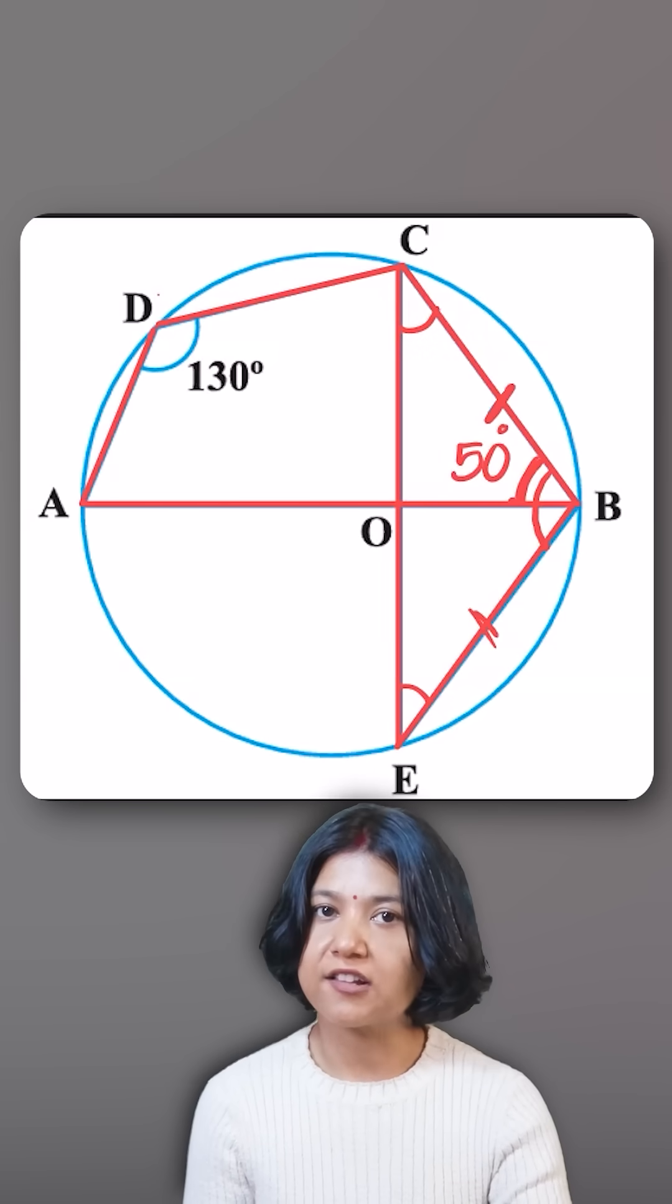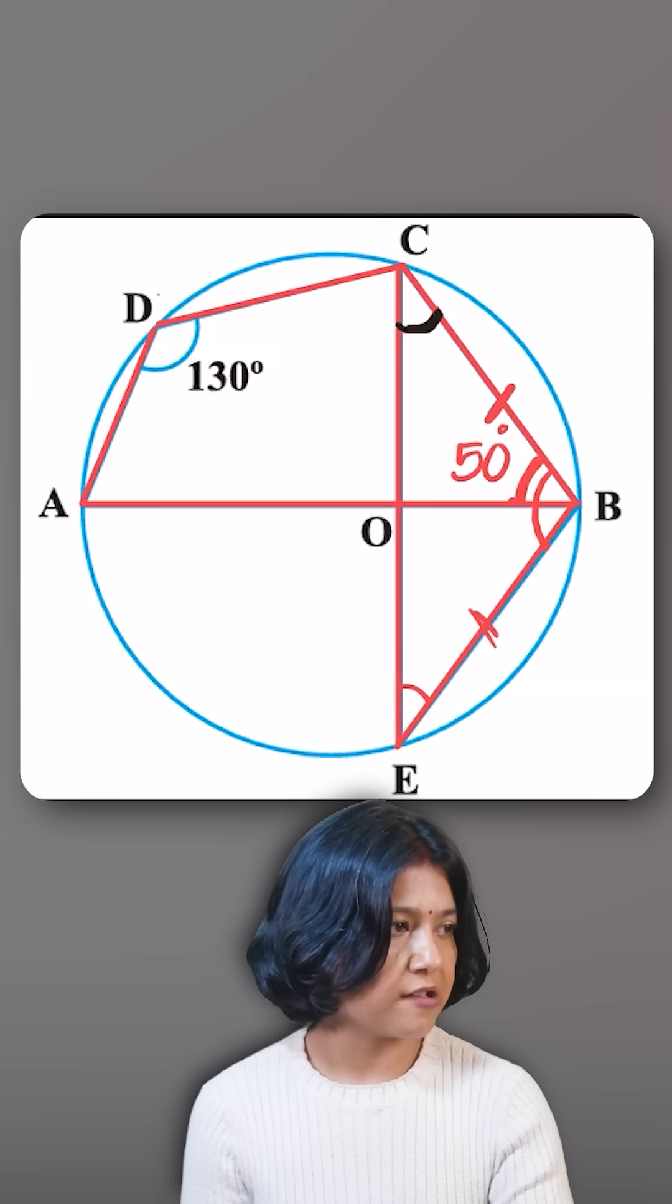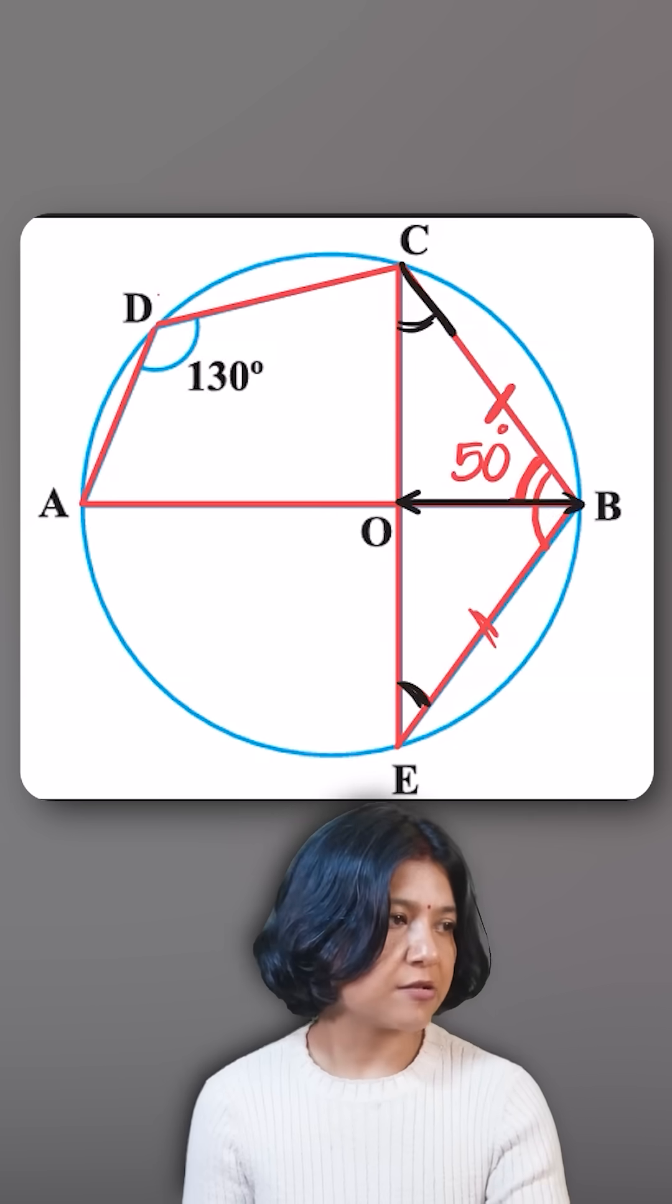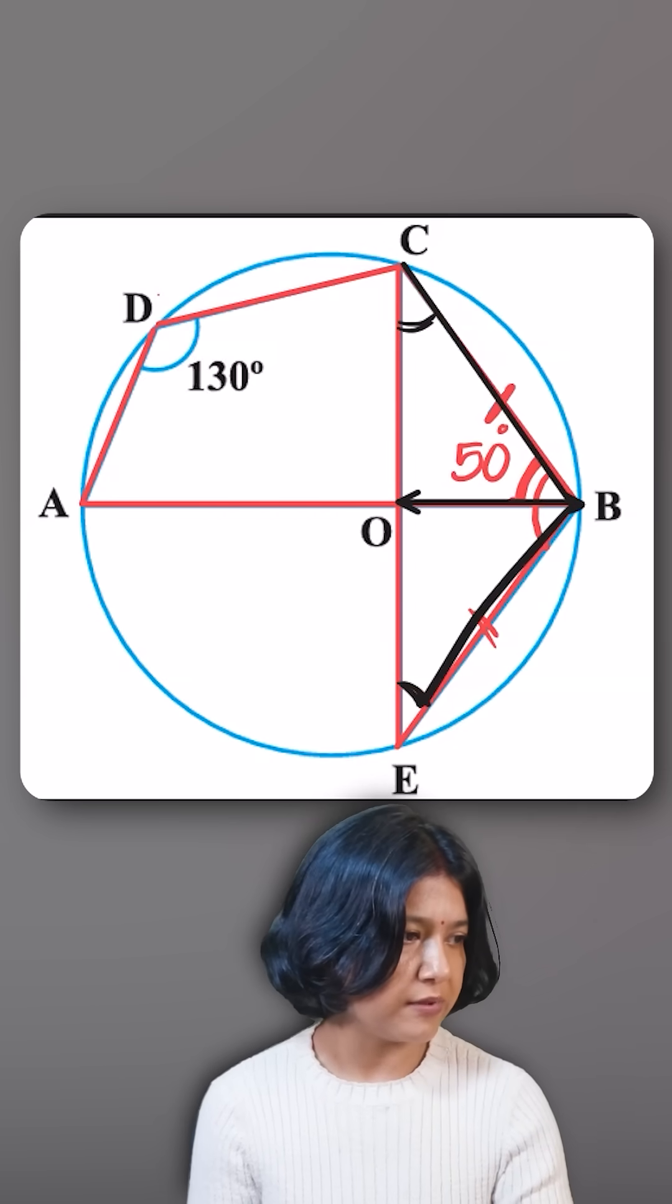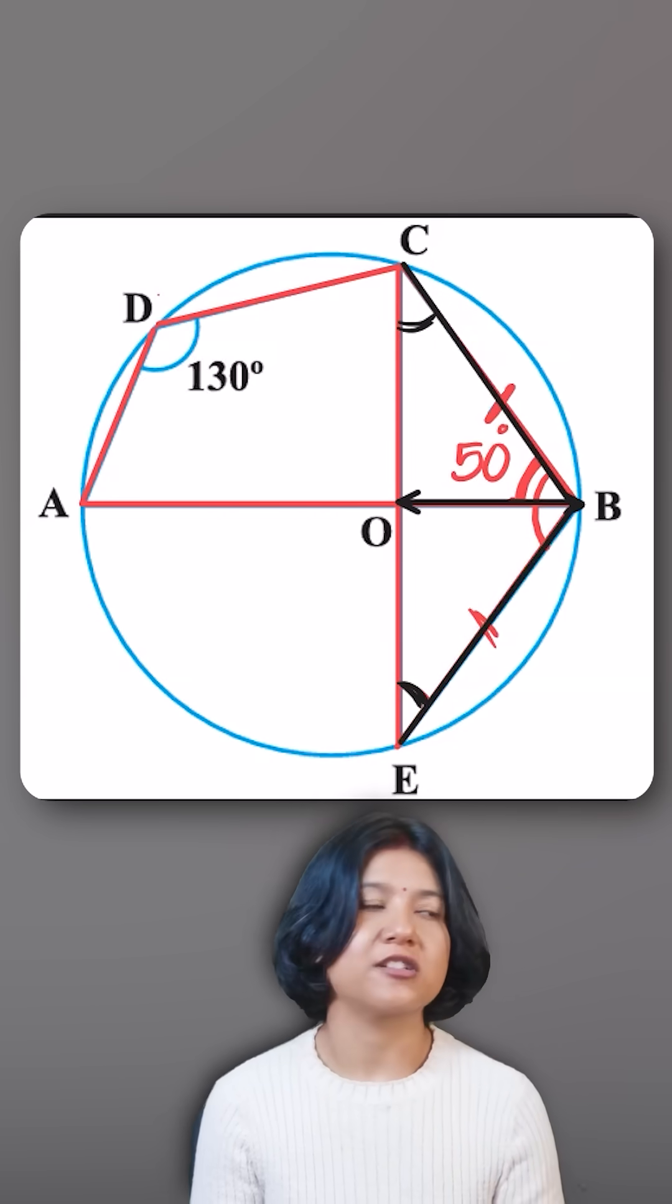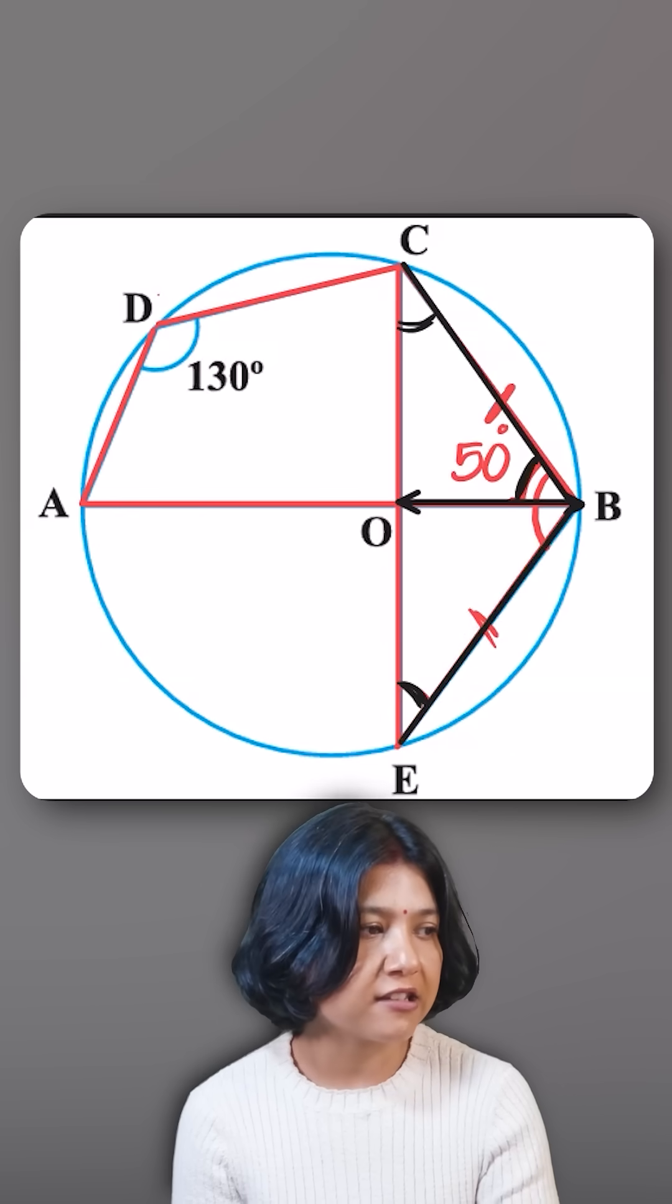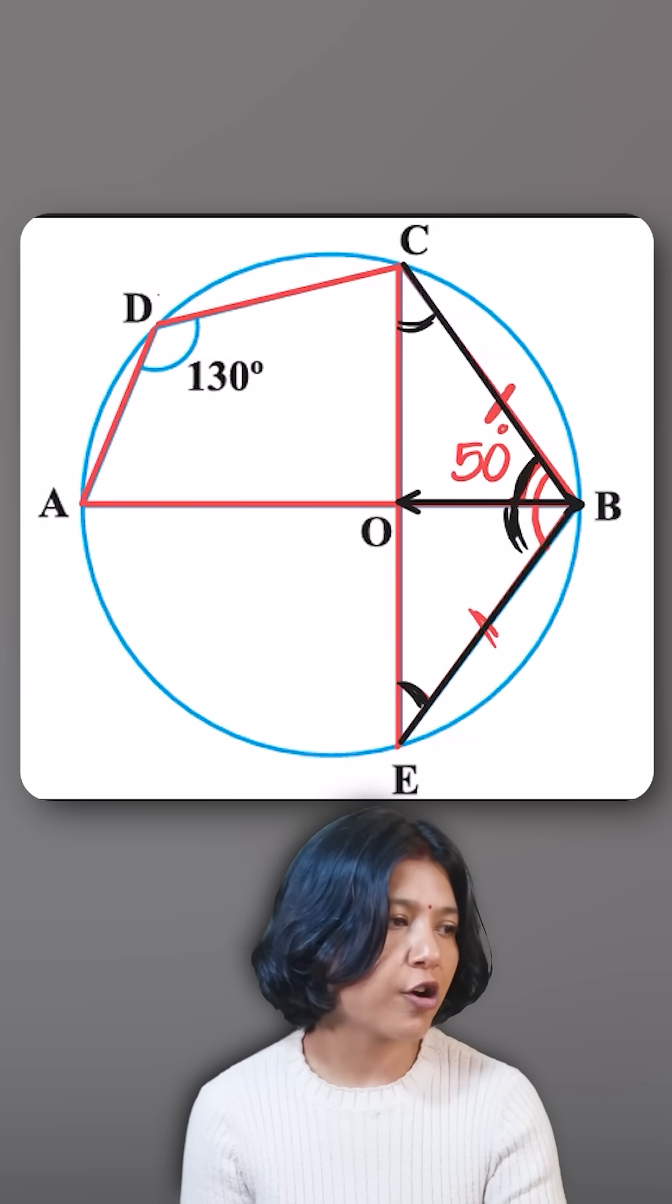This angle is equal to this angle, the side BO is common to both, and BC is equal to BE - that's the given information. So with the help of congruency, I'll say that if this angle is 50, then this also has to be 50, telling me that the overall angle BCE has to be double of 50, which is 100.